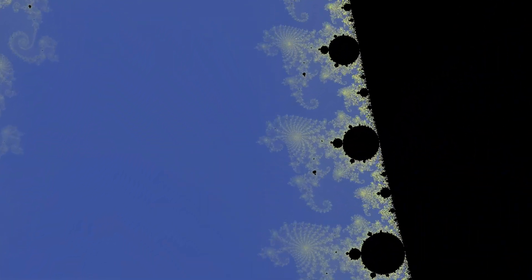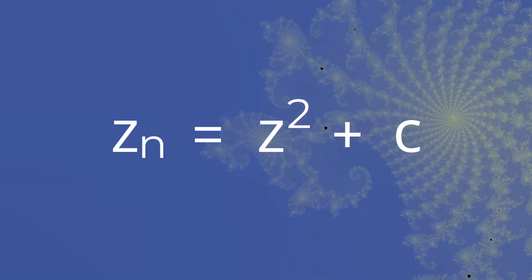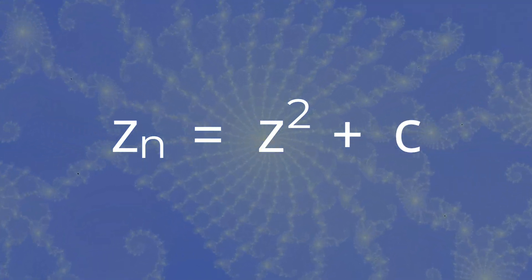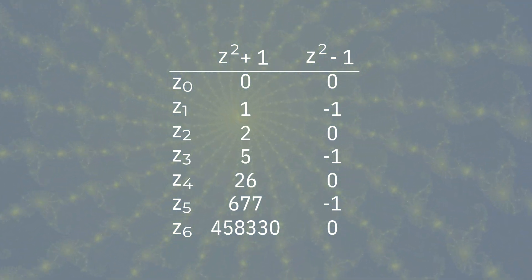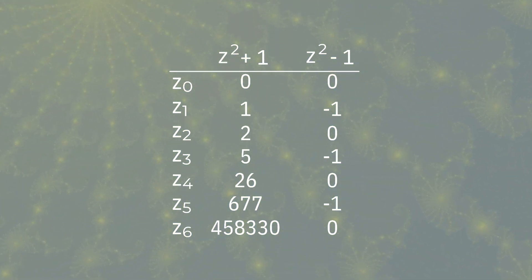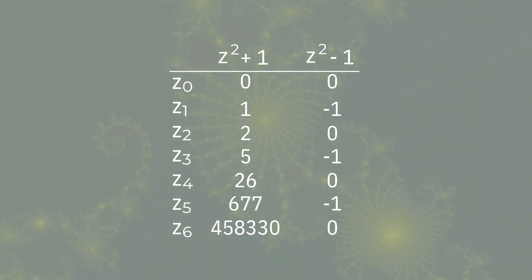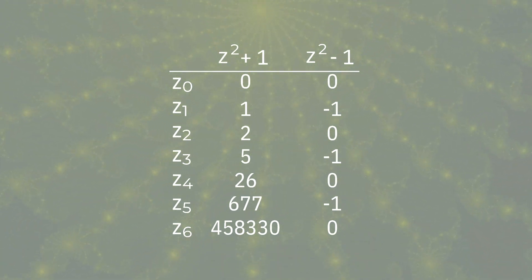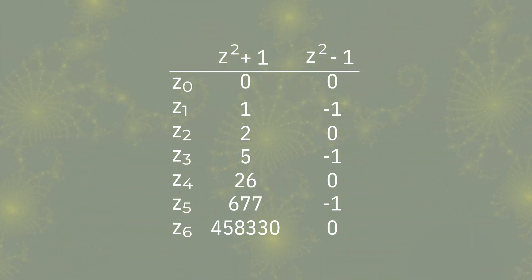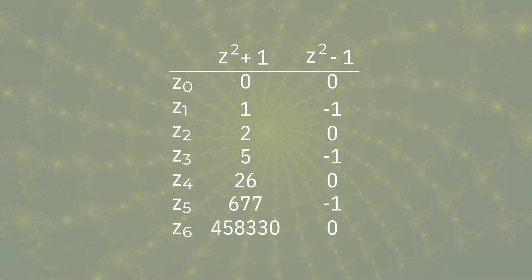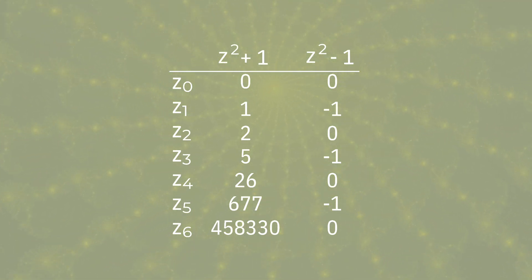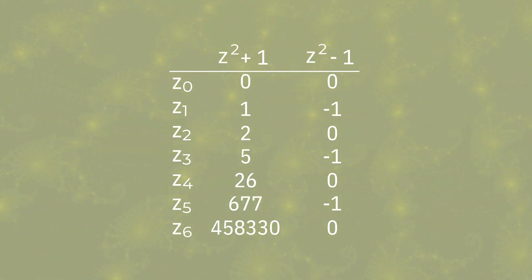The Mandelbrot set is the collection of all points C in the complex plane for which the sequence defined by Z equals Z squared plus C remains bounded. By analyzing certain points C — for example, when C is equal to 1, we observe that the sequence grows very rapidly, meaning it will be outside the set. For C equal to minus 1, the sequence becomes periodic, therefore this point will be in the set.